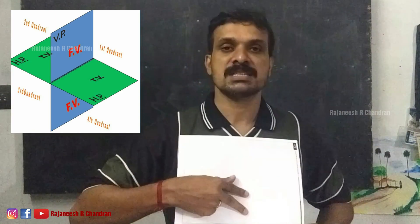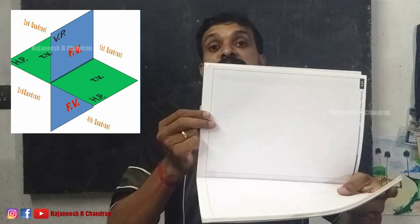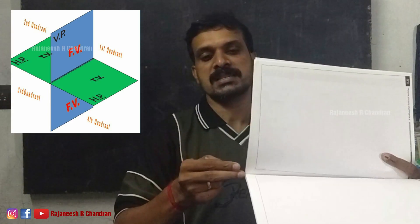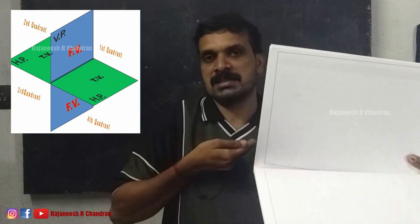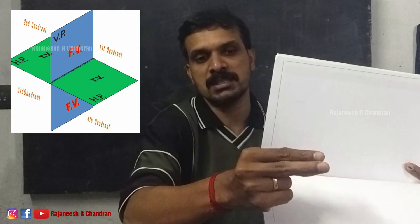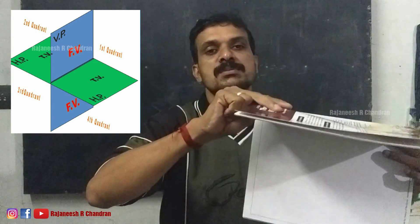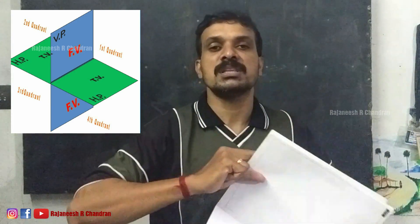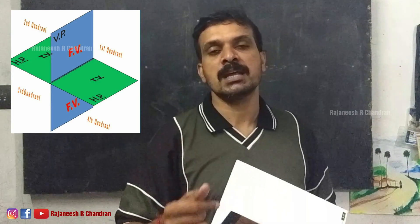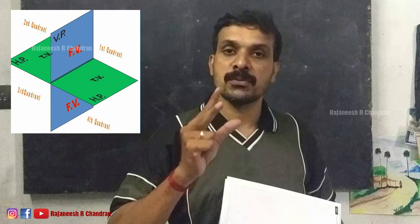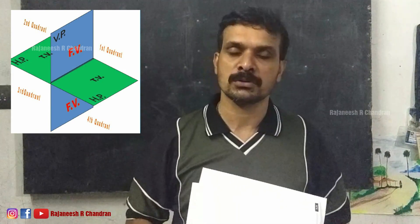The vertical plane and horizontal plane are of infinite or dimensionless length, extending in both directions, giving us four compartments. These four compartments in space obtained by the two planes — horizontal plane and vertical plane — are known as quadrants. There are four quadrants in the two-plane system: first, second, third, and fourth quadrant, as visible on screen.